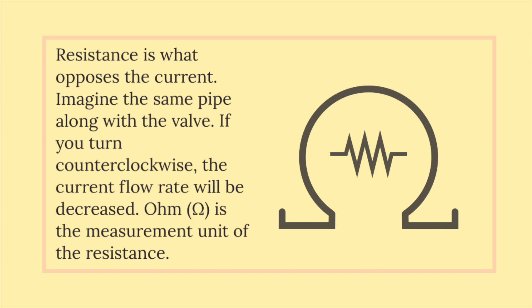Resistance is what opposes the current. Imagine the same pipe along with the valve. If you turn counterclockwise, the current flow rate will be decreased. Ohm is the measurement unit of the resistance.